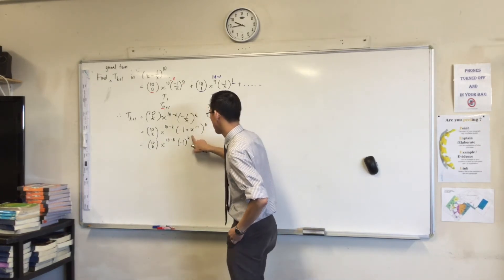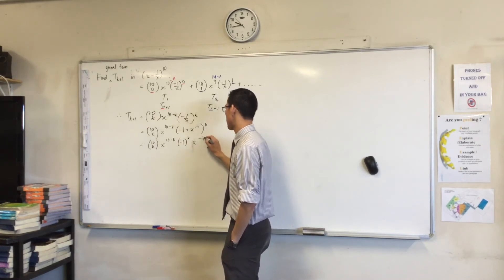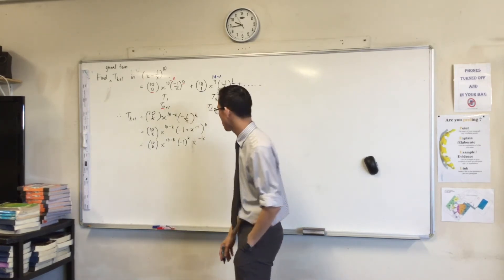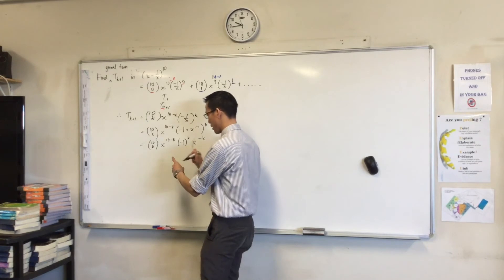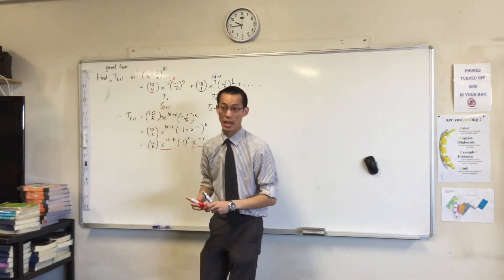So I actually don't need this. This is going to be x to the power of negative k. I just multiply those indices across. And now I can see here and here. Multiplying numbers with the same base.